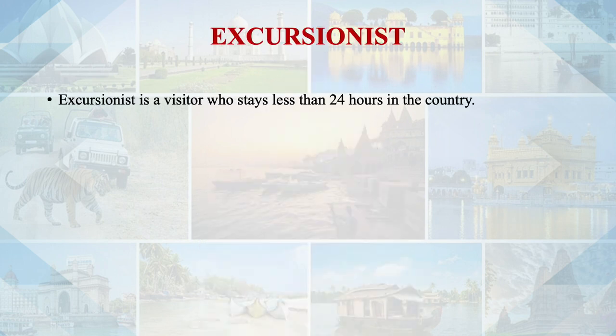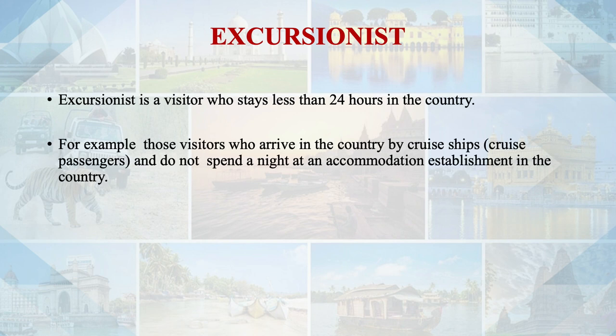The third excluded category is persons who come as excursionists. An excursionist is a visitor who stays less than 24 hours in the country. For example, visitors arriving by cruise ships — they dock at a seaport in India, do not stay, their accommodation is on the ship only, but they get to sightsee a destination and then go back. So they do not spend a night at an accommodation establishment and are considered excursionists.